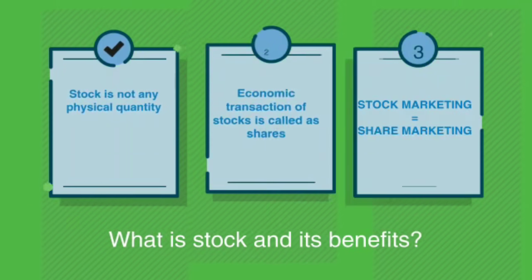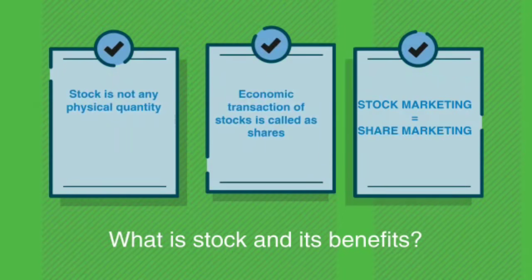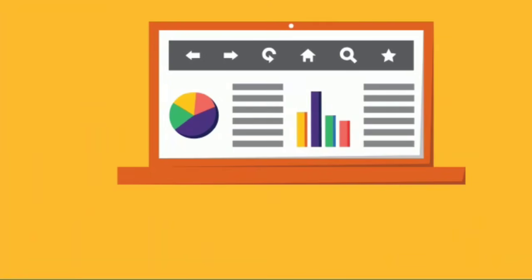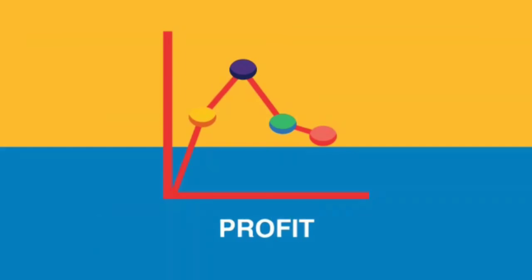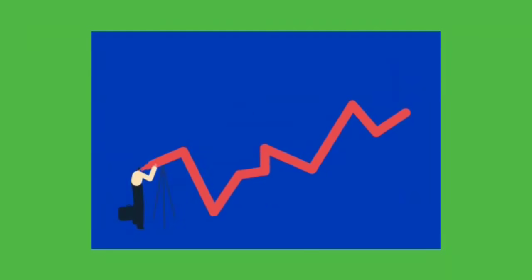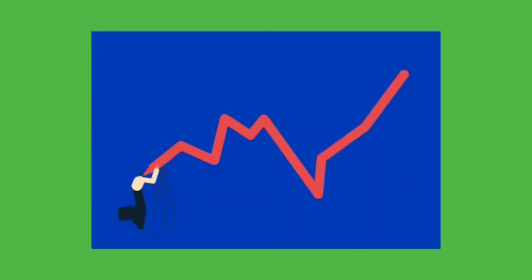Stock is not any physical quantity. It is a network of economic transactions of stocks also called shares. Stock marketing is also called share marketing. In simple words, stock market is an online market where you can simply go and buy and sell shares. You will earn profit according to your predictions and calculations about which stock price will come down and which will go up.